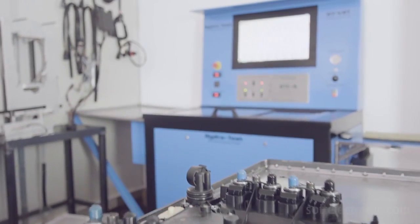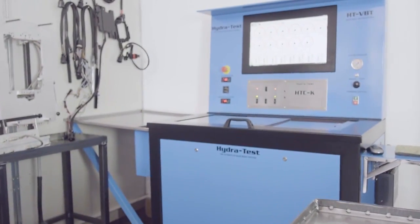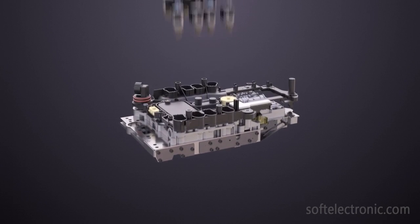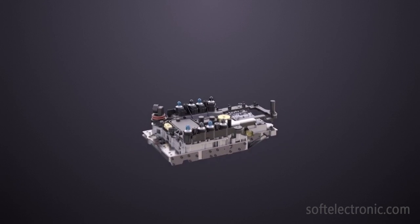After the problem is eliminated, the mechatronic is once again tested on the specialized stands. If the tests pass successfully, the valve body is assembled to the control unit and the mechatronic is mounted in the gearbox.